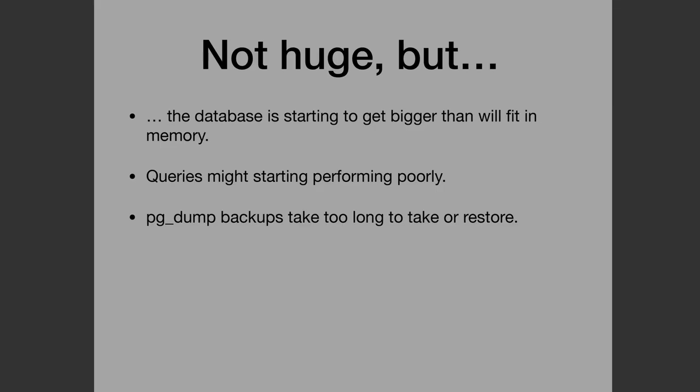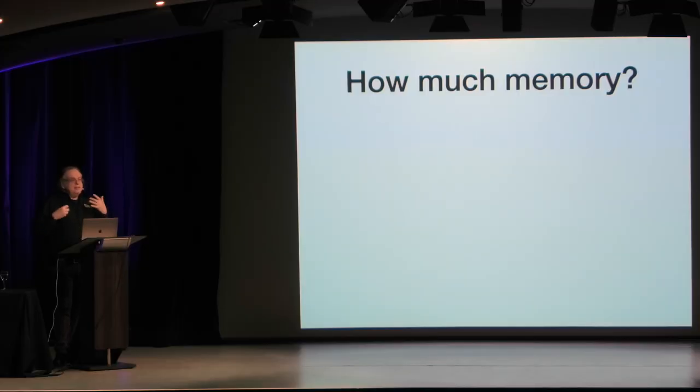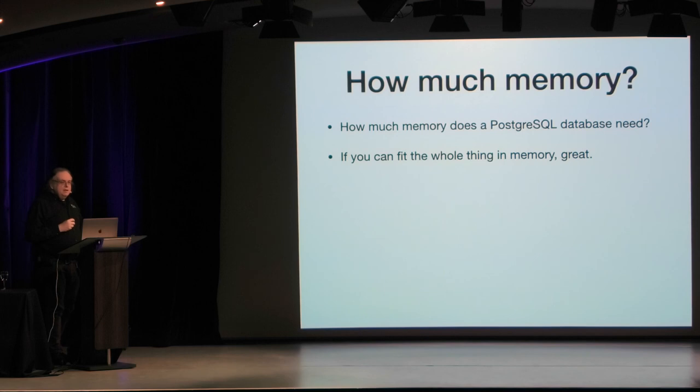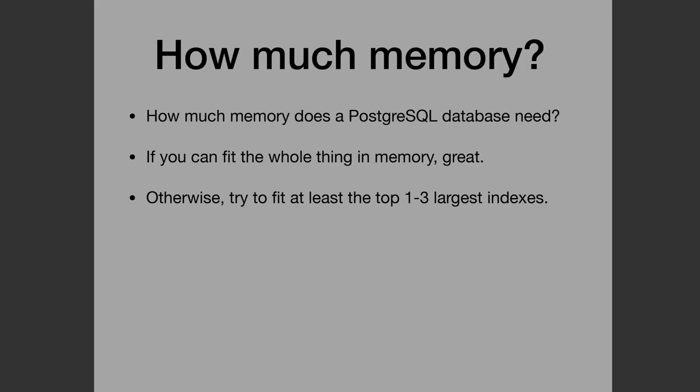At this point, pg_dump backups might start taking too long to either take or restore. Dumping and restoring a 500-gigabyte database is not the fastest thing in the world. How much memory do you need? There's no really easy answer because it depends on the workload and a lot of other things. But if you fit the whole thing in memory, great - 100 gigabytes is still quite practical, and getting a 128-gigabyte instance is no big deal. Otherwise, a good rule of thumb is try to squeeze the top one to three largest indexes into memory.